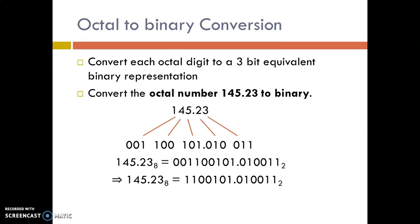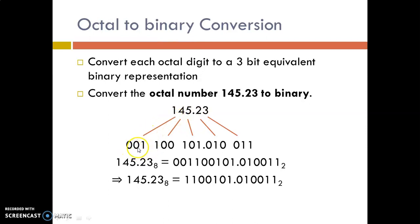Now we will see how to convert octal number to binary number. Since the base of octal is 8 and base of binary is 2, each octal digit is equal to a 3-bit binary equivalent. We take each digit of the octal separately and write the binary equivalent in 3 bits. The binary equivalent of 1 is 001, 4 is 100, 5 is 101, 2 is 010, 3 is 011. Any leading zeros can be neglected. This is how you convert an octal number to a binary number.